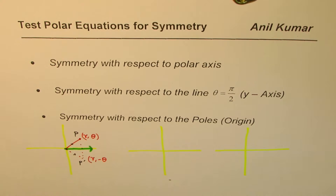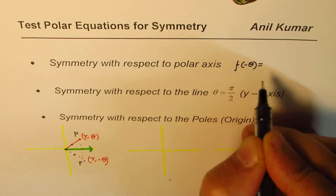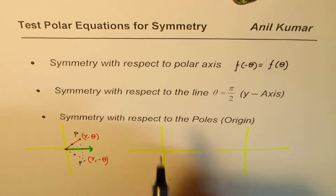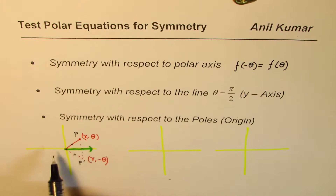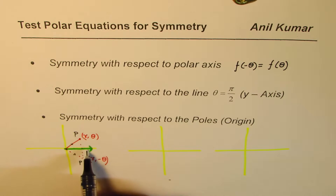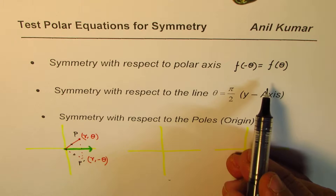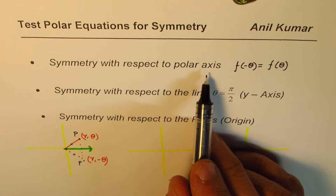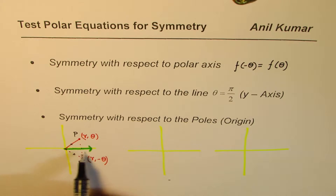We say such a situation is symmetry with respect to the polar axis. Algebraically, we find this symmetry when f(-θ) equals f(θ). That means if I have a curve on one side, it can be reflected on the polar axis as a mirror image to complete the whole curve. This is symmetry about the horizontal polar axis.